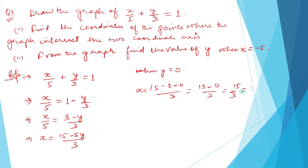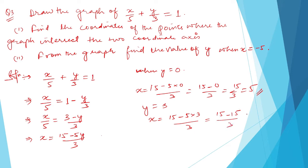When y is equal to 3, x will be equal to 15 minus 5 times 3, divided by 3, which equals 15 minus 15, divided by 3, which is 0 divided by 3, equal to 0.